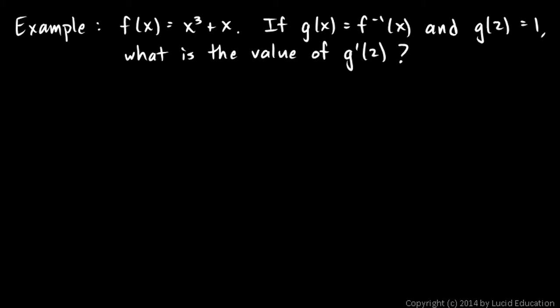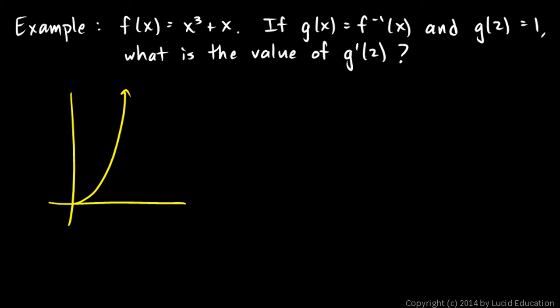So g of 2 equals 1, so we know a particular point on function g, which is the inverse of f, and then we're asked a question about the slope of function g, or the slope of the inverse of f. So let's graph what we know here. x cubed plus x looks something like this, and so its inverse is going to look something like this. This is function f, and the inverse here we've just named g, so that's function g.